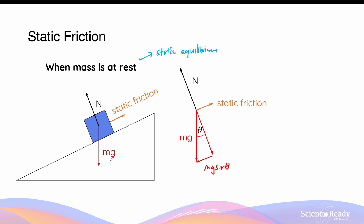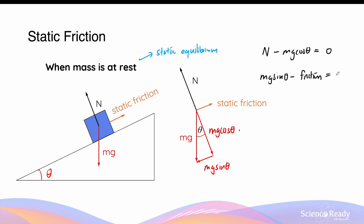Remember that the angle theta here is the same as the angle of the inclined surface. The normal force vector balances with Mg cos theta. Looking at all force vectors in the two directions — up or down the slope, and away or towards the surface — all vectors should be balanced. So the normal force minus Mg cos theta gives a net force of zero, and Mg sin theta minus the static friction also gives a net force of zero, keeping the mass in static equilibrium at rest.